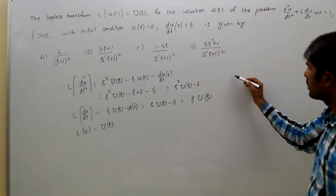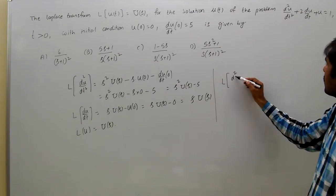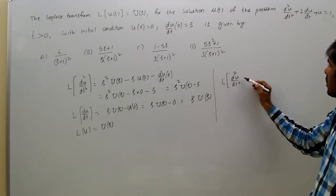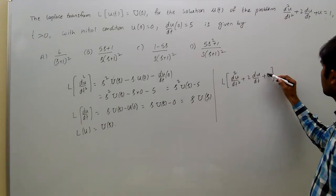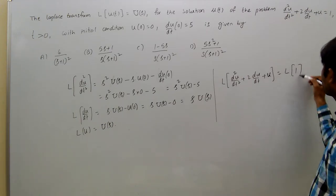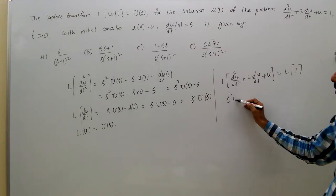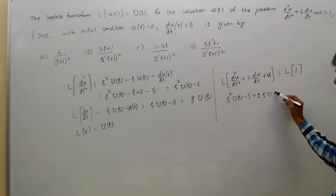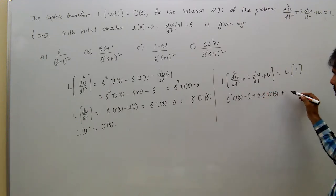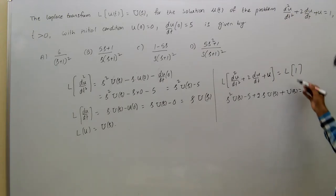Now the differential equation in Laplace transform form is: the Laplace transform of d squared u by dt squared plus 2 du by dt plus u equals the Laplace transform of 1. That means s squared U(s) minus 5 plus 2 times s U(s) plus U(s) equals 1 by s.